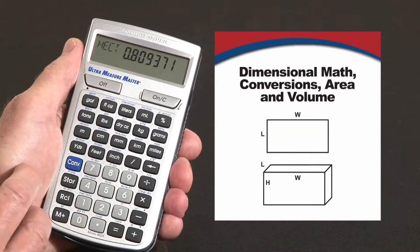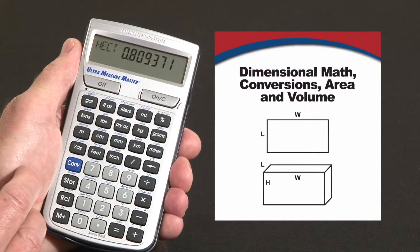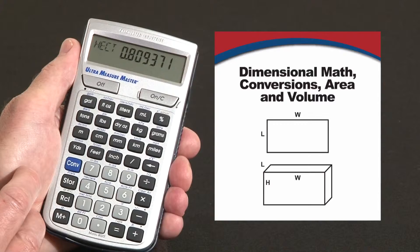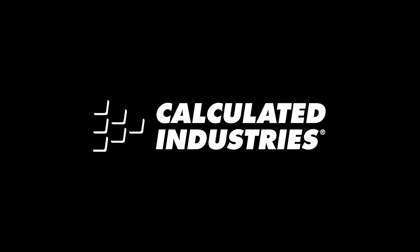There's all sorts of linear area and volume conversion units built in to the Ultra Measure Master. So that's a quick overview on the linear area and volume calculations. For more details you can download our user guide at www.calculated.com/support.